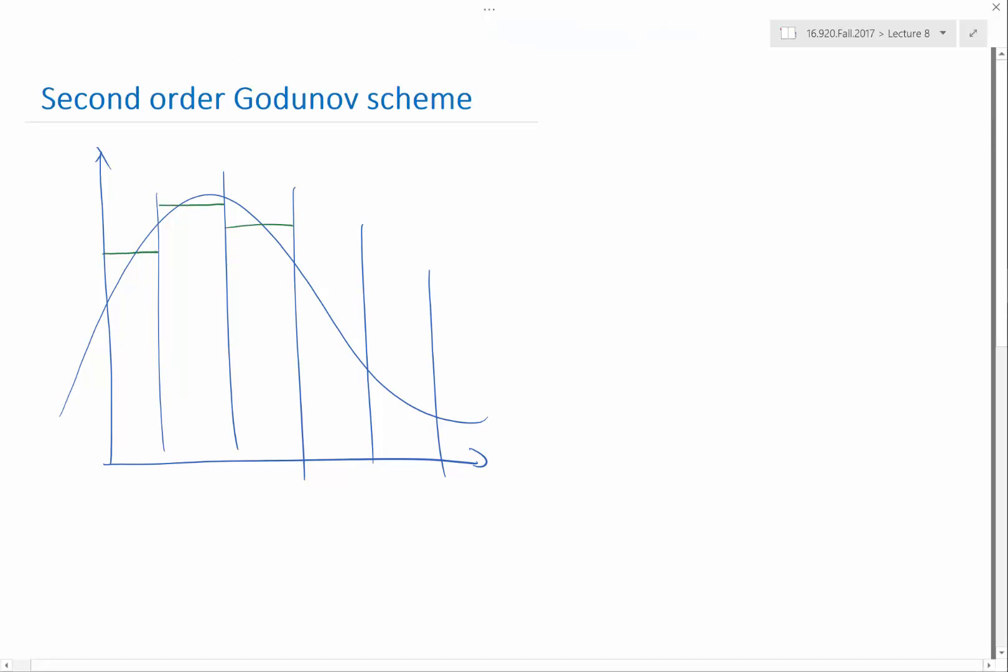If I have a function like this and volumes like that, I have been treating the function as if it's a constant over here, another constant over here, another constant over here. But in practice we don't have to do that.